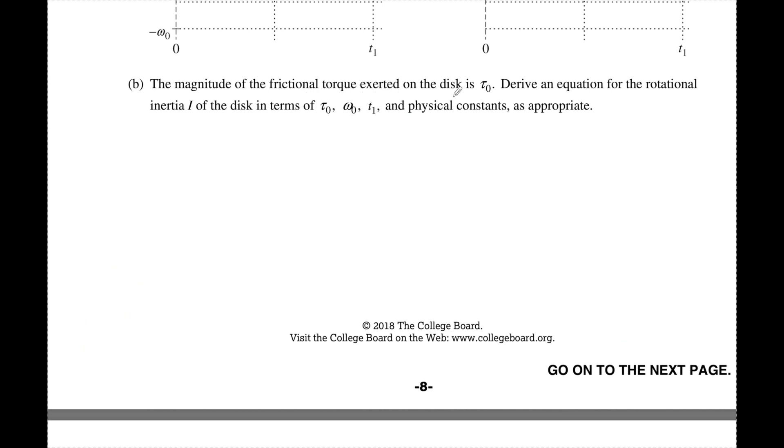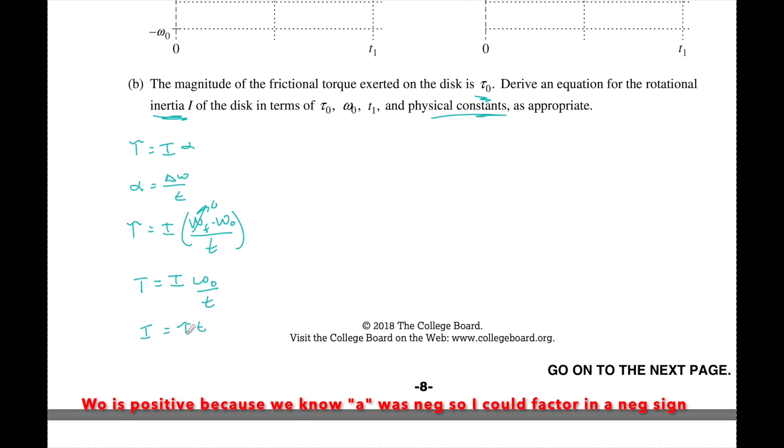The magnitude of the frictional torque exerted is given by this, derive an equation for the rotational inertia I in terms of torque, the initial angular speed, time, and any physical constants. I know that Newton's second law for rotation is written as torque equals I alpha, where I is the moment of inertia and alpha is that angular acceleration. I know that alpha also equals a change in angular speed over time. So if I substitute that in, I can say that torque equals I times omega final minus omega initial over T, but they told us that this comes to rest. So I can say that torque equals I times omega naught over T. I can therefore equal torque times time over omega naught.